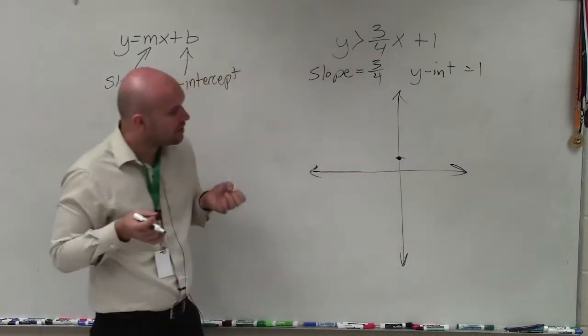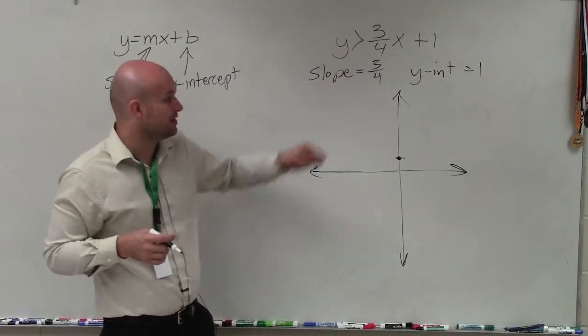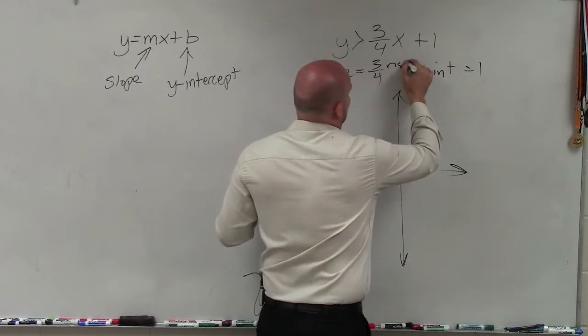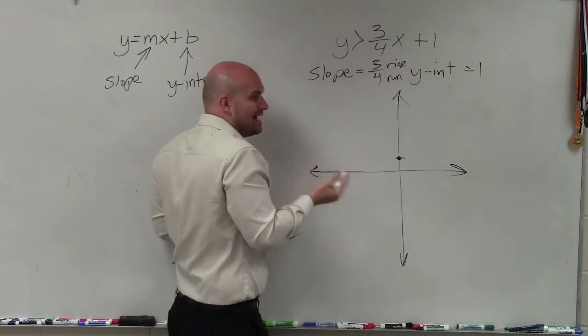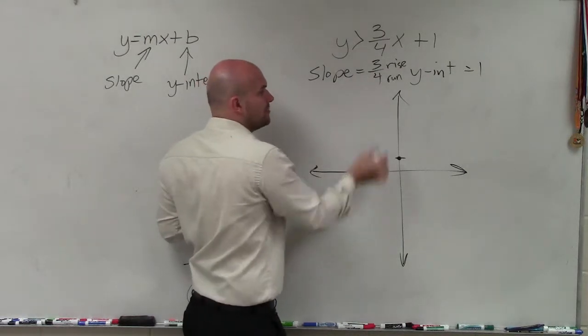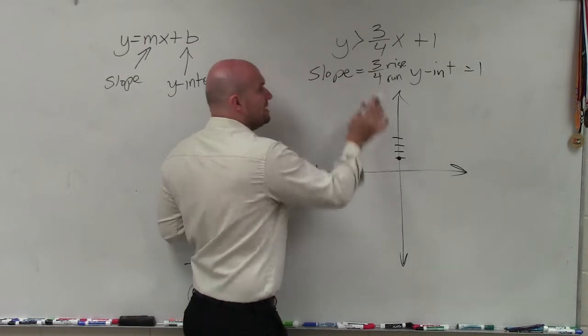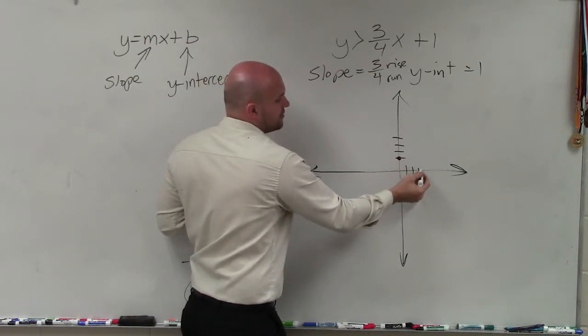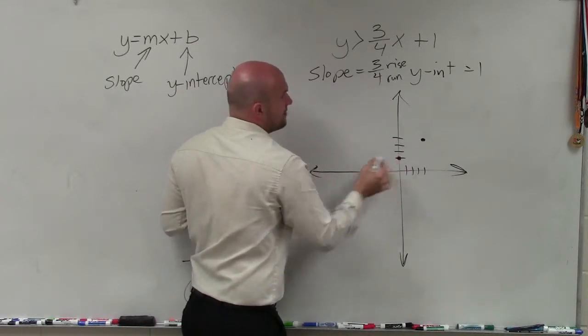And now, to apply the slope, remember the slope represents the change in the y-coordinates between any two points over the change in the x-coordinates between any two points, also a lot of times referred to as the rise over run. So to find my next point that lies on the line, I can use the slope. So if the change in the y-coordinates is 3, that means to find the next point I can go up 3. And then, to change the x-coordinates positive 4, I can go over 4 units. So I go up 3 over 4, and now I have found my next point.